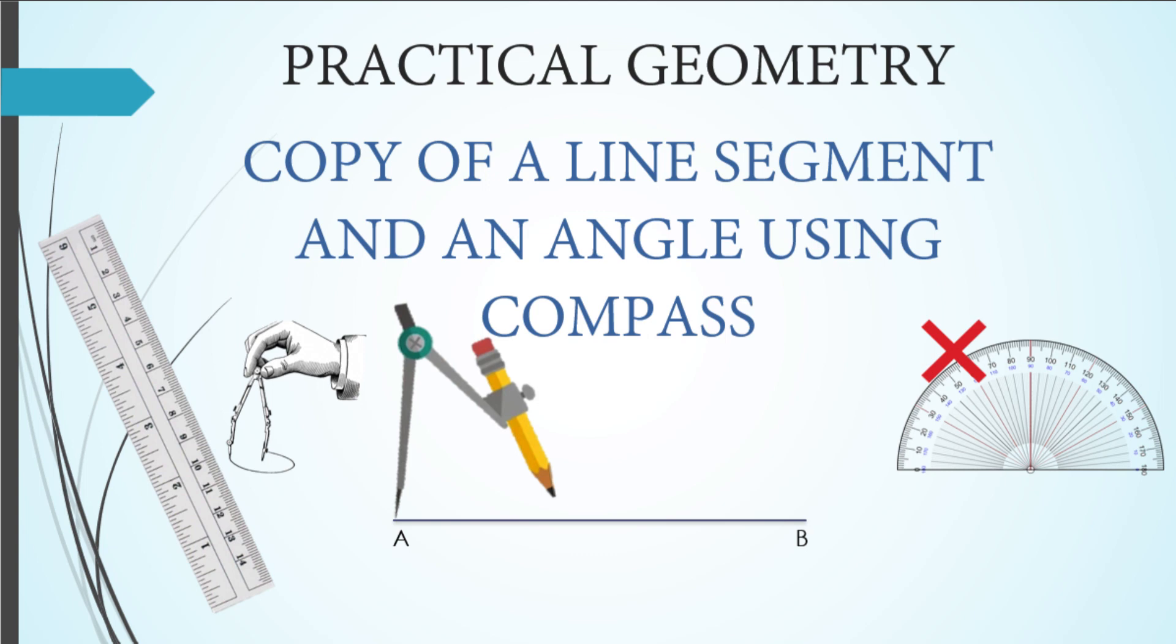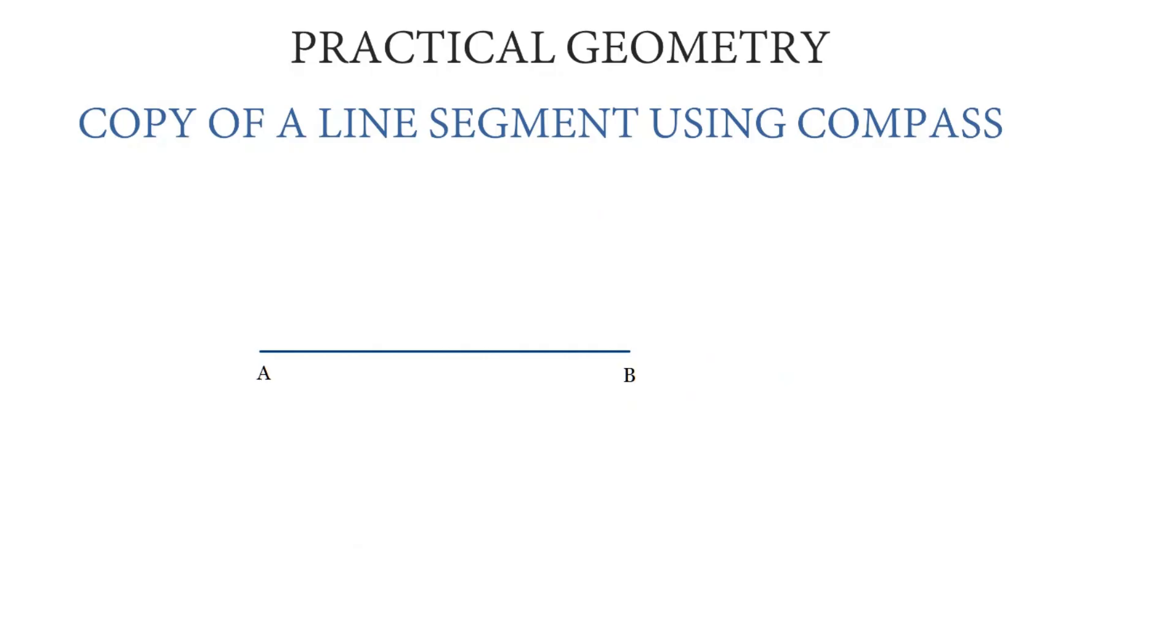In this session, we'll see how to make a copy of a line segment and an angle using a compass. To copy a line segment, consider any line segment AB. First, draw a line and mark the leftmost point as P.